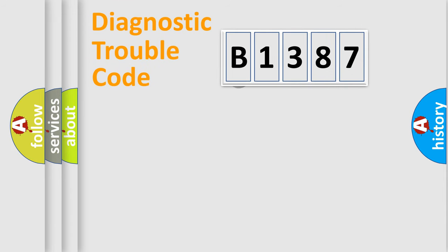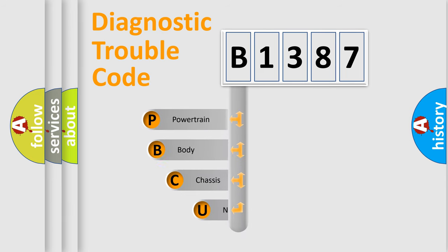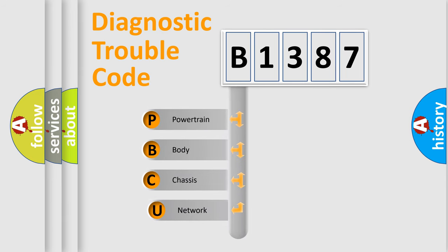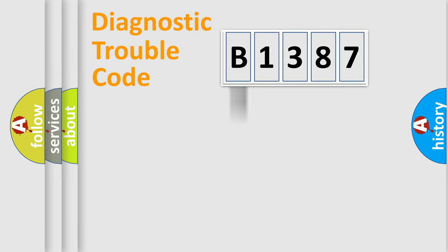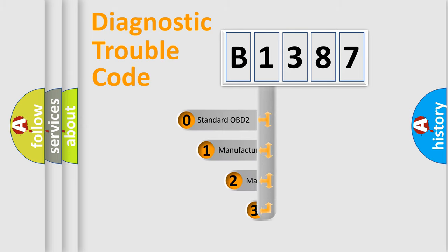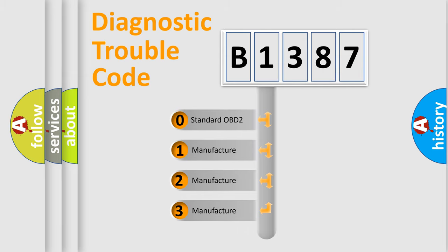Let's do this. First, let's look at the history of diagnostic fault code composition according to the OBD2 protocol, which is unified for all automakers since 2000. We divide the electric system of automobile into four basic units: Powertrain, Body, Chassis, and Network. This distribution is defined in the first character of the code.